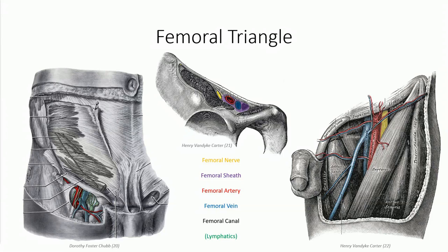Note that the latter three structures are encased in an extension of the superficial fascia known as the femoral sheath, but that the femoral nerve is external to this. From a surface anatomy perspective, the femoral triangle is an important landmark. In the case of severe bleeds in the lower limb, pressure to the femoral triangle, where the femoral artery pulse can be palpated, can temporarily restrict blood flow to prevent excessive losses in blood volume.